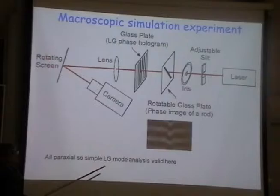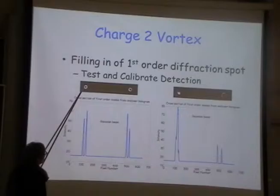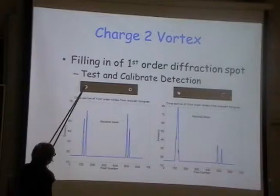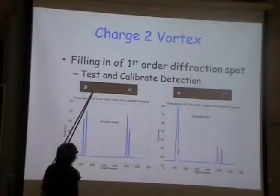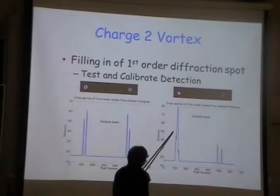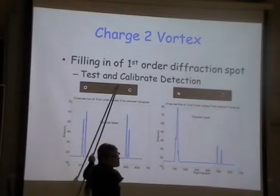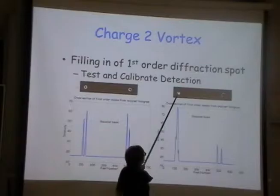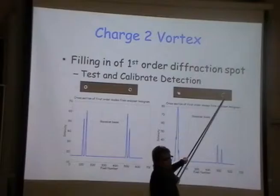I'm operating in the paraxial approximation, so the simple LG mode analysis should be valid here. First I test the method: I put the Gaussian beam in and observe that through the LG02 hologram I get perfect Gauss-Laguerre LG02 nodes in transmission. When LG02 goes into an LG02 hologram, straight through I get the same, upwards I get a Gaussian beam, and downwards I get LG04.